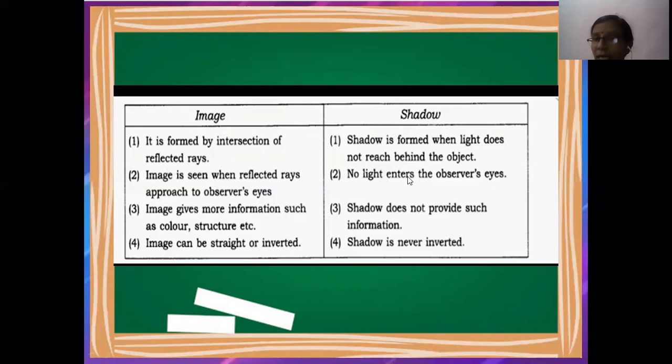But for shadow, no light enters the observer's eyes. Next thing, image gives more information such as color and structure, everything. It gives the size, shape, structure, and color. But shadow does not provide such information. Shadow only gives an outline.